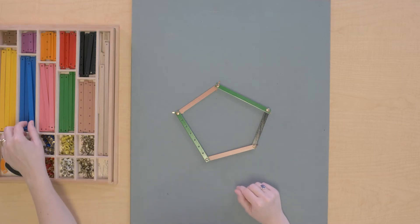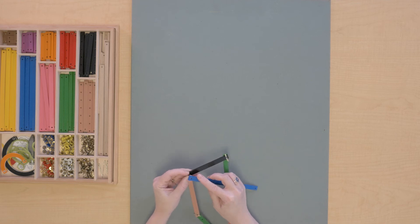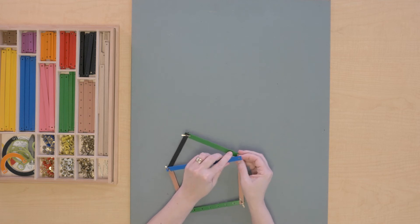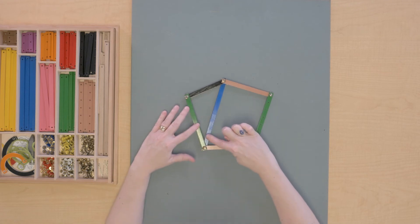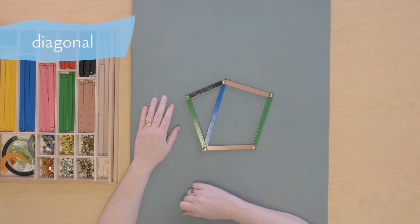And then there's one more thing I want to show you. If I add a stick here from this vertex across to another vertex, this is a diagonal of the polygon.